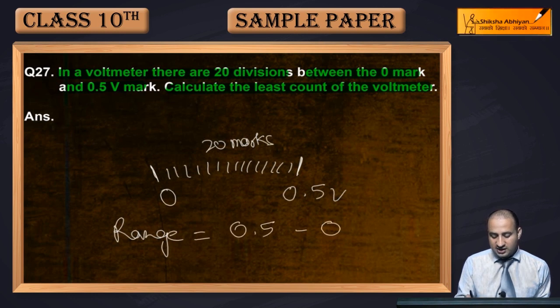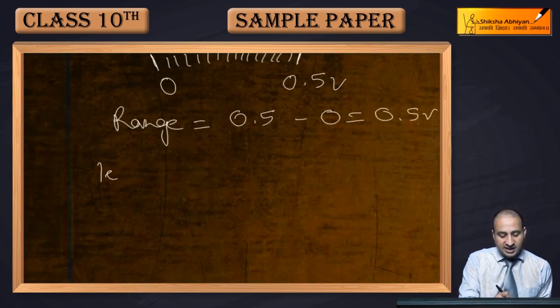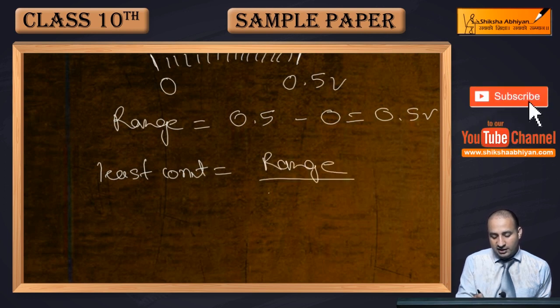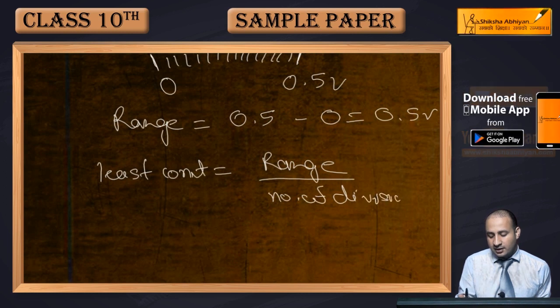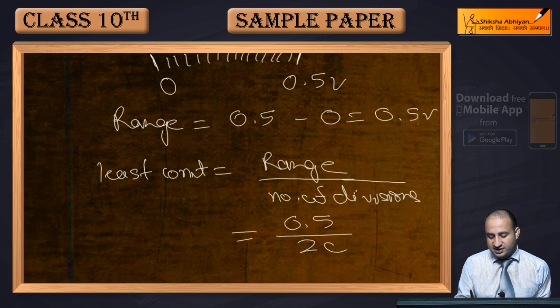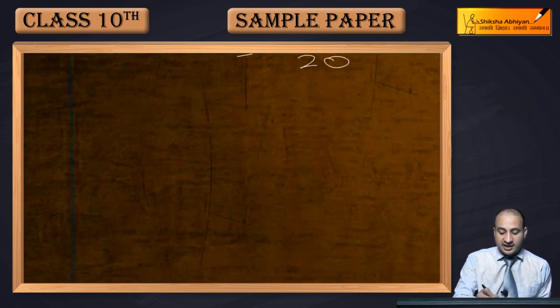And divisions are 20. So the least count will be range upon number of divisions. You divide by the number of divisions. When you divide 0.5 by 20, for this I'll take 5 as 500.